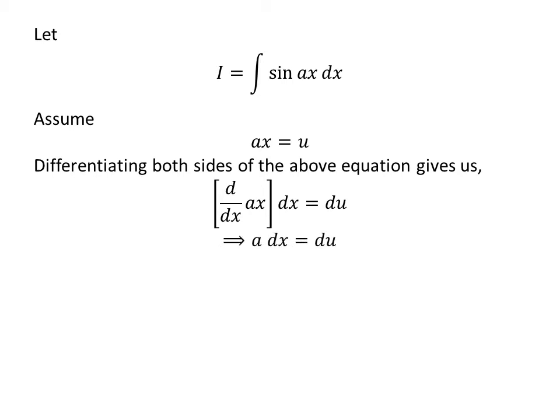As we know, the derivative of ax with respect to x is equal to a, so a times differential of x equals differential of u. Let's take the constant a to the right, so differential of x equals 1 over a times differential of u.